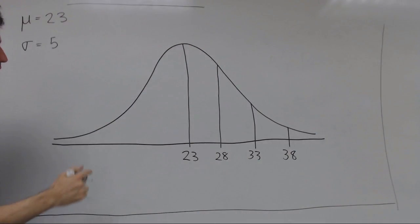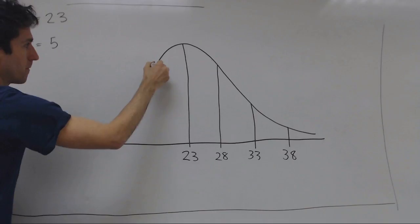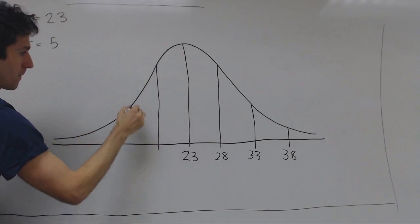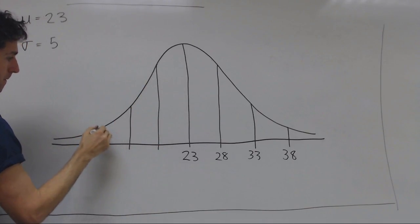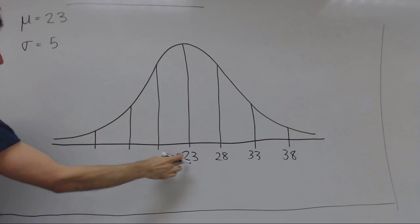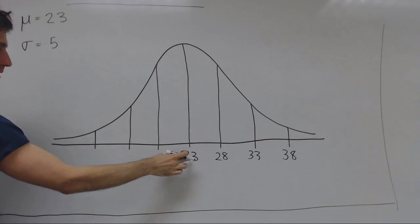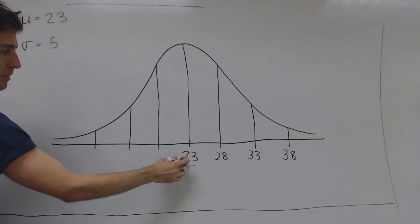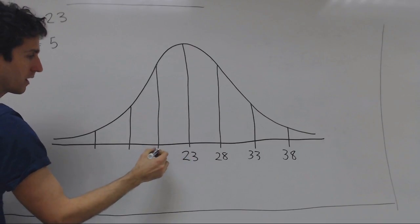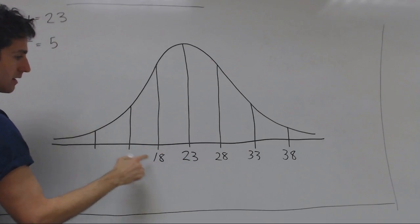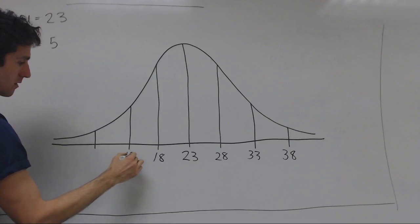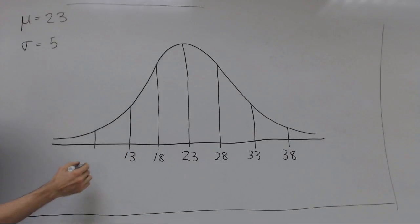Now we do the same thing on the other side. This time we subtract the standard deviation from the mean. 23 minus 5 is 18. 18 minus 5 is 13. 13 minus 5 is 8.